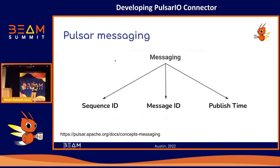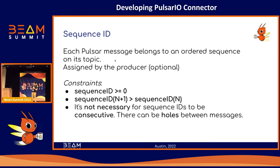The core of Pulsar is the message. Messages are the basic units of Pulsar, and each message has several properties. I want to focus on three. The first is the sequence ID: each message in Pulsar belongs to an ordered sequence on its topic, and it has to be assigned by the producer — it is not a default option. The sequence ID must be greater than or equal to zero, each next sequence ID must be greater than the previous one, and the IDs do not need to be consecutive — there can be holes between messages.